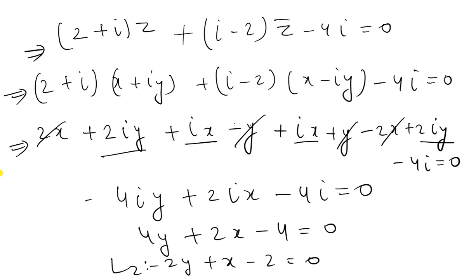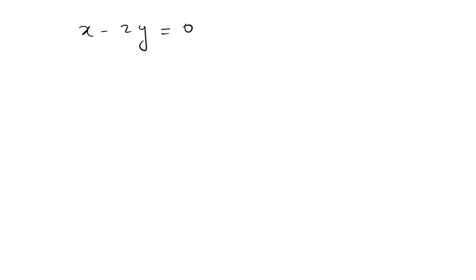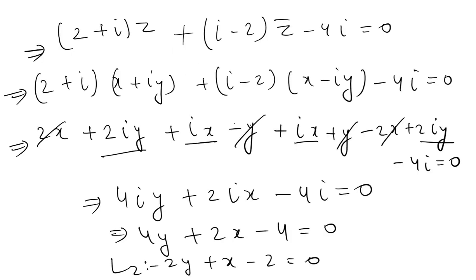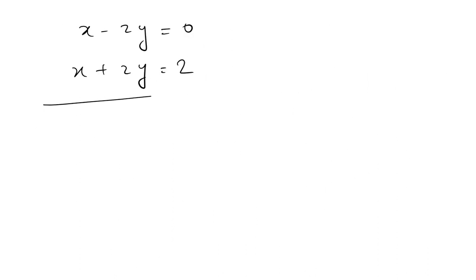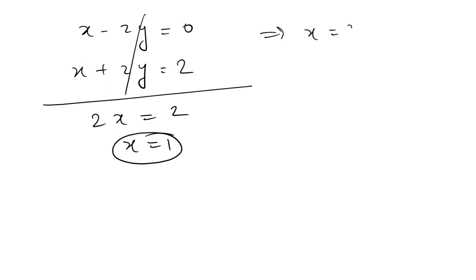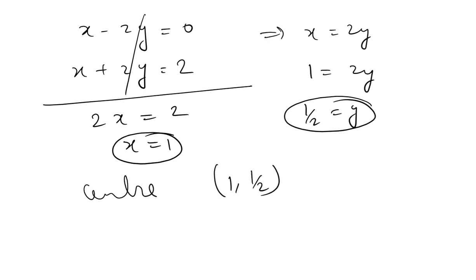We now have two normal equations: L1 is x - 2y = 0, and L2 is x + 2y = 2. Solving these simultaneously by adding: 2x = 2, so x = 1. From x = 2y, y = 1/2. Therefore the center of the circle is (1, 1/2).